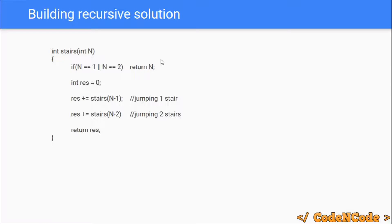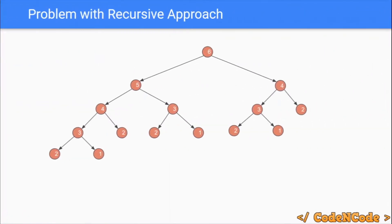Previously, the iterative approach had a running time of O(n), linear in n. But this recursive approach is actually exponential — O(2^n) — because from each function call we are making two recursive calls. For example, to calculate n equals 6, we make two recursive calls for n equals 5 and n equals 4. To calculate n equals 5, we again make two recursive calls for n equals 4 and n equals 3, and so on.